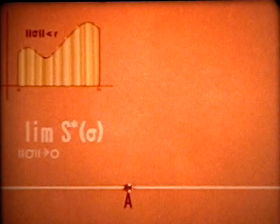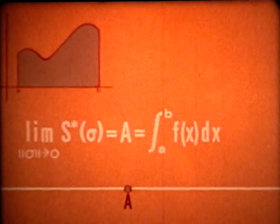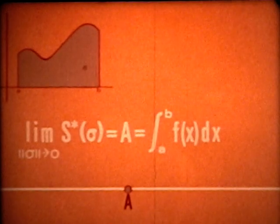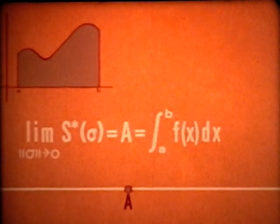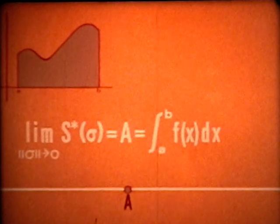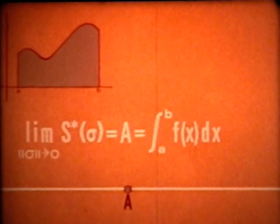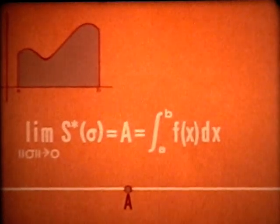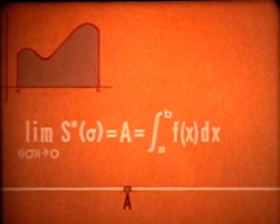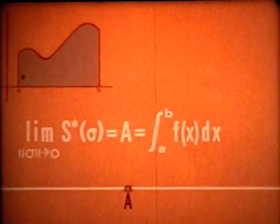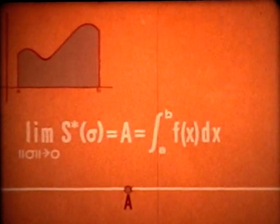No matter how small a positive number P is given, a number R can be found that makes the set of star sums lie in the given P-neighborhood of A. We say that the limit of the star sums as the norm goes to zero is equal to A, and this limit is called the definite integral from A to B of F. The integral of a positive continuous function on a closed interval always exists and is equal to the area of the region between the graph of F and the interval.